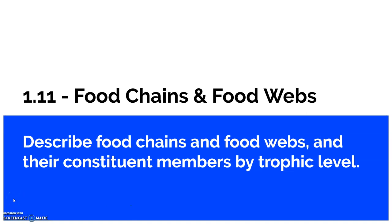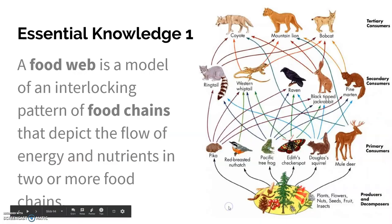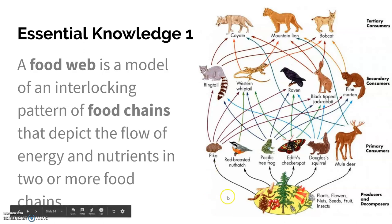1.11 is the last one on food chains and food webs. The learning objective is to describe food chains and food webs and their constituent members by trophic level. A food web is just a whole bunch of food chains all put together, because it recognizes that you can be eaten by more than one thing and you can eat more than one thing. So it depicts the total flow of energy and nutrients in that ecosystem.